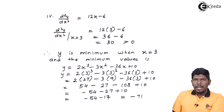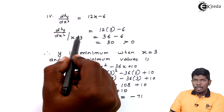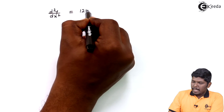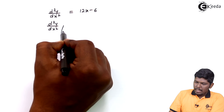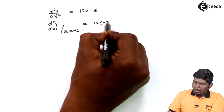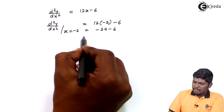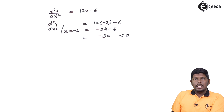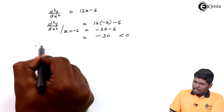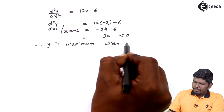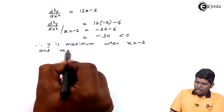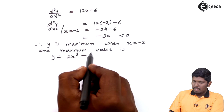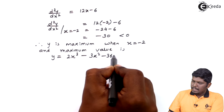Now we find the maximum value by substituting x = -2 into the second order derivative. d²y/dx² at x = -2 gives 12(-2) - 6 = -24 - 6 = -30. Since -30 < 0, the function is maximum at x = -2. Therefore y is maximum when x = -2.